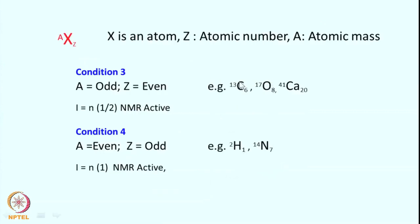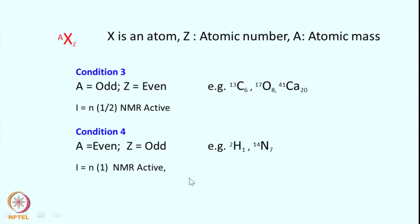Third condition: where atomic mass is odd and atomic number is even — like carbon-13, oxygen-17, or calcium-41. These nuclei are also half-integral and NMR active, amenable for high resolution NMR. Fourth condition: where atomic mass is even and atomic number is odd — for example deuterium (an isotope of proton) or N-14 (the natural isotope of nitrogen). In all these cases, the spin quantum number is integral and they are also NMR active, but their NMR requires a little tweaking, and we will discuss how to do NMR of these so-called quadrupolar nuclei.